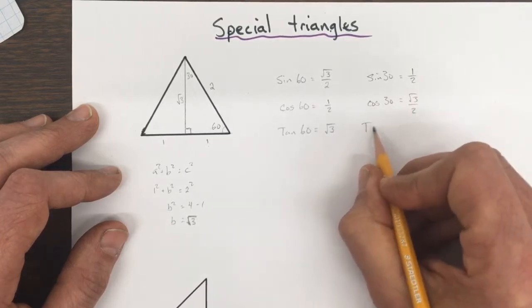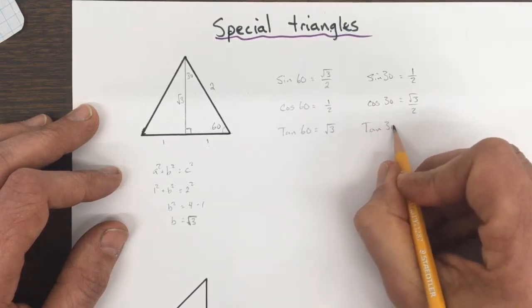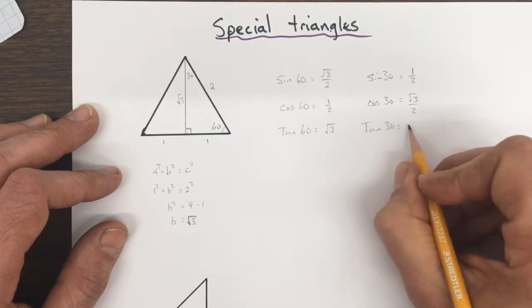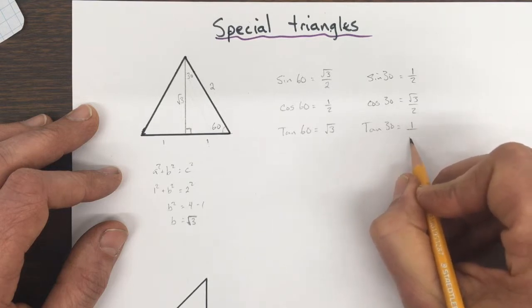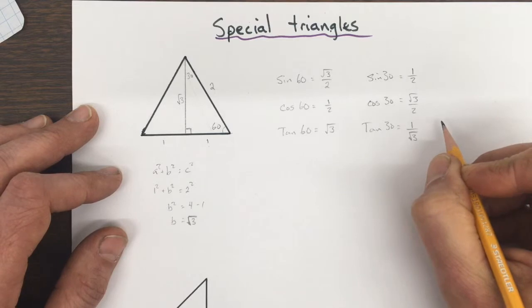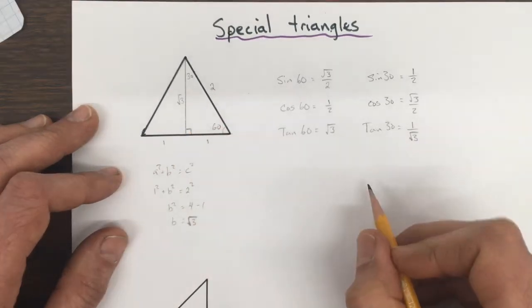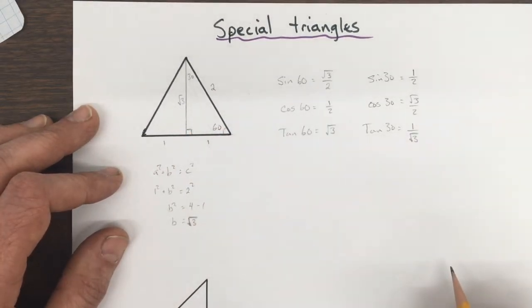And the tan of 30 is equal to 1 over root 3. That's opposite over adjacent. So that's the first special triangle.